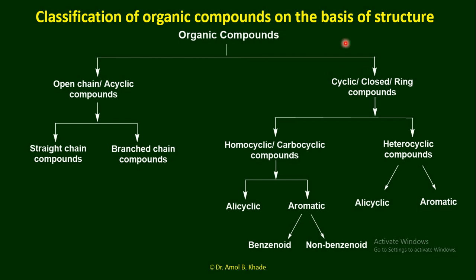Looking at the first type of classification based on structure: we can divide organic compounds into two categories. The first category is open chain or acyclic compounds — those whose structures have no cyclic or ring formation. Open chain compounds, in which rings are absent, can be further divided into straight chain compounds and branched chain compounds. The second broad category is cyclic, where a ring is present in the structure.